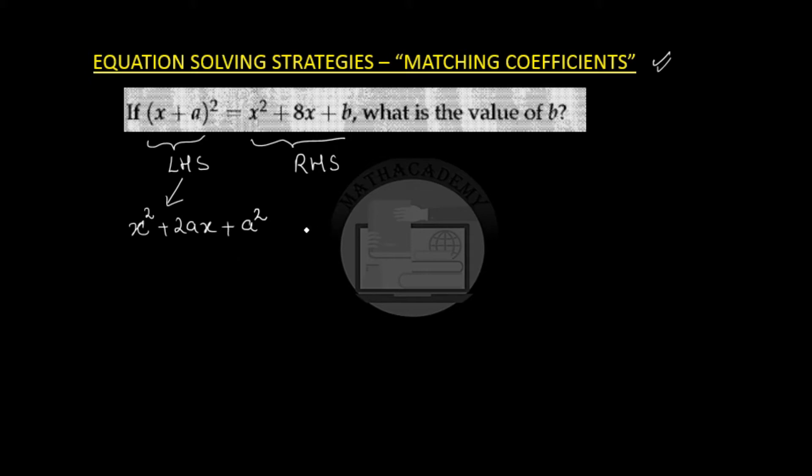So let us come back to this question and the right hand side is x square plus 8x plus b. The two expressions on either side of the equality will be equal when the coefficient of x square on both the sides are same. So both the sides the coefficient of x square is 1.